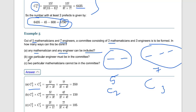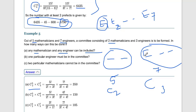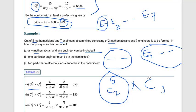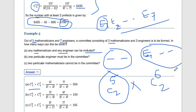Part (b): one particular engineer, say E1, must be in the committee. One engineer's seat is fixed, so we have only two remaining seats for engineers, and only six engineers to choose from. So the engineer part becomes 6C2. The mathematician part remains 5C2.